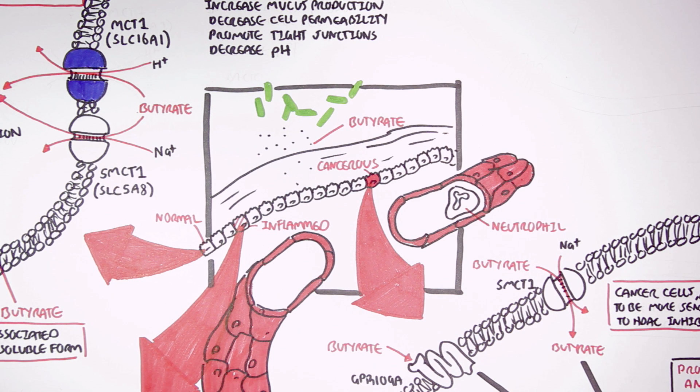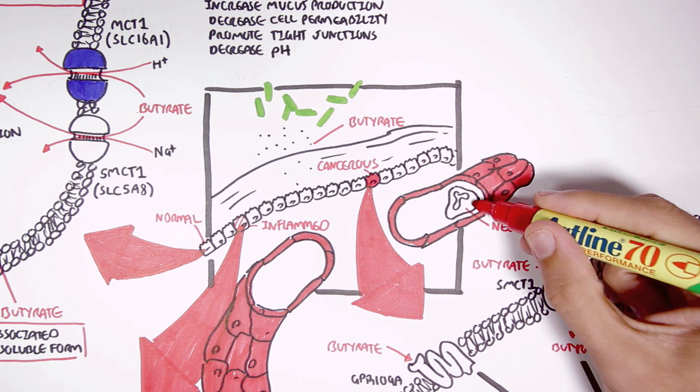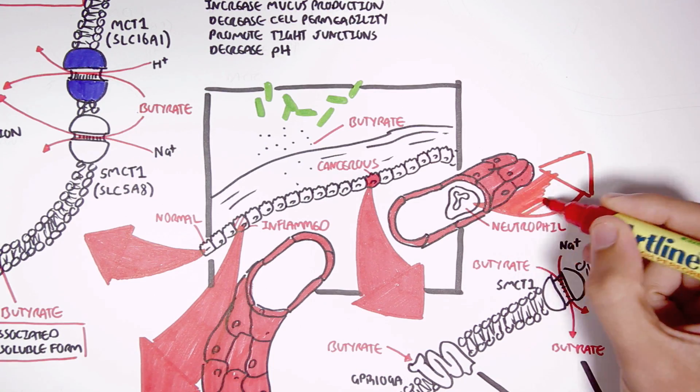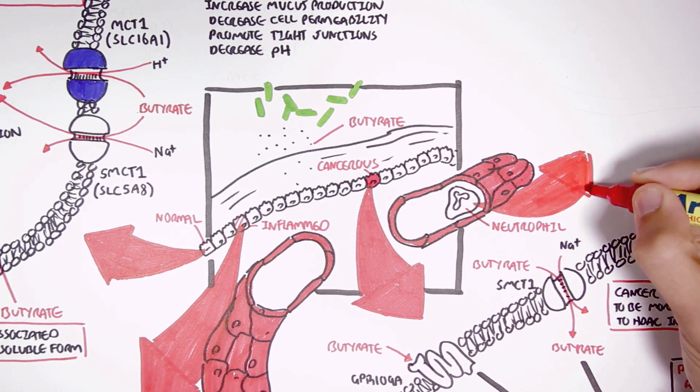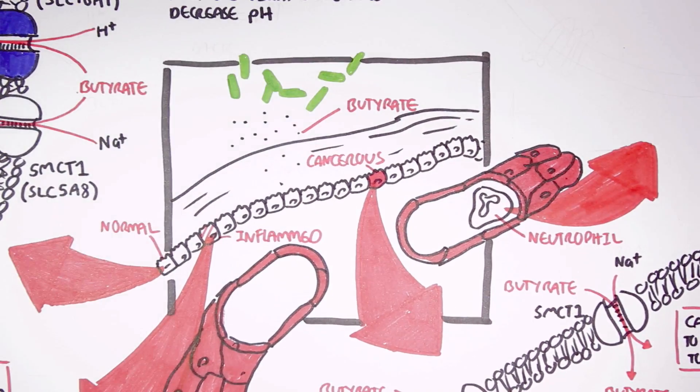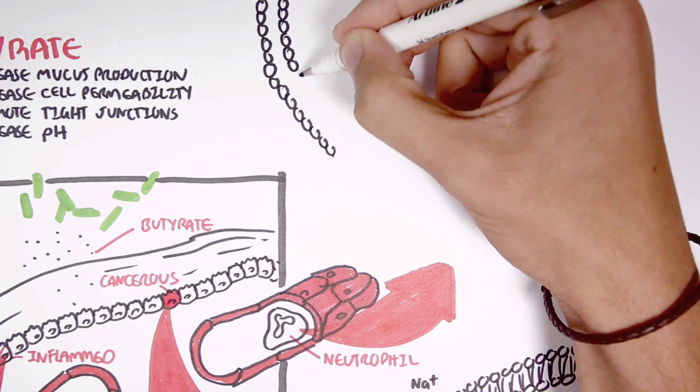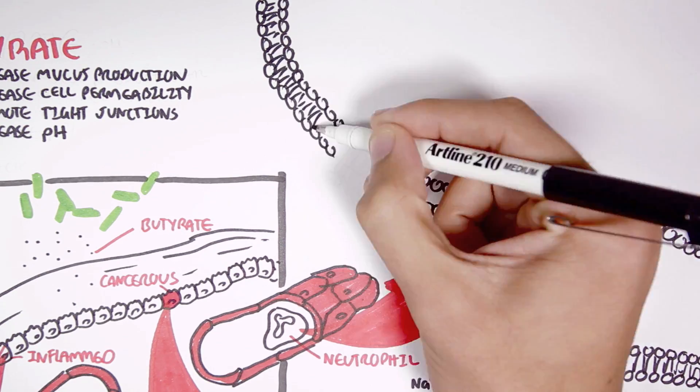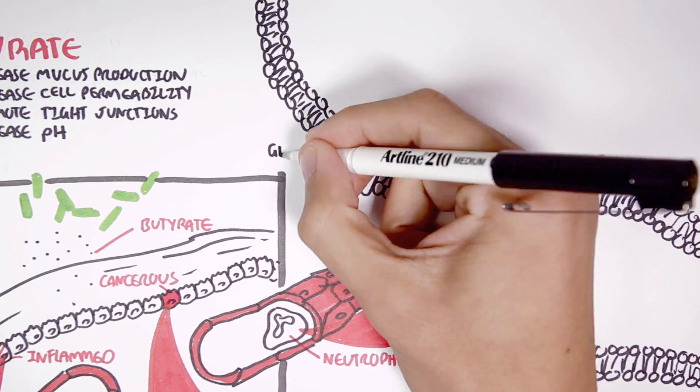Finally, butyrate can affect the immune system in many ways. But for now, we will concentrate on the effects butyrate have on neutrophils. Now, butyrate can act on the G protein receptor 43 and 41 on immune cells.